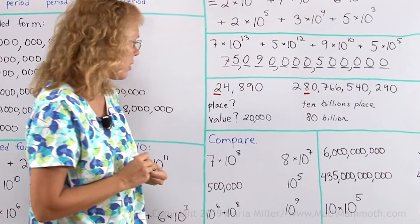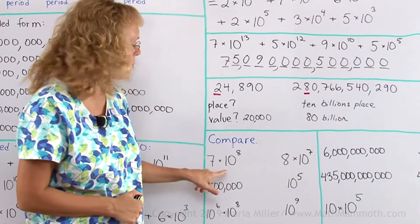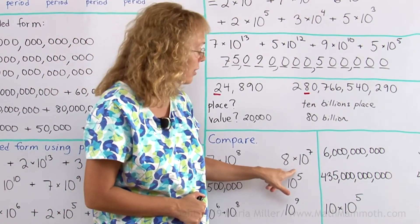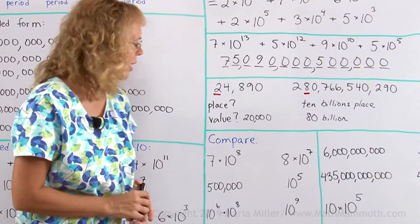Lastly, we are going to compare some numbers. Which one is more: 7 times 10 to the 8th power, or 8 times 10 to the 7th power?